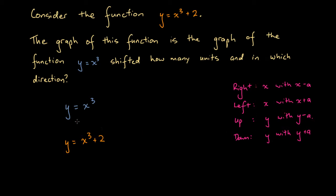We've got to figure out what we have to do in order to get from this function in blue to this function in orange — in other words, what do we have to replace in order to get from one function to another. At the moment it's difficult to see, but we can subtract 2 from both sides of this orange equation, giving us y minus 2 equals x cubed.